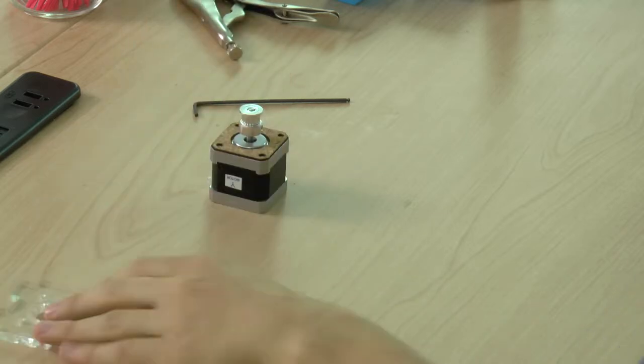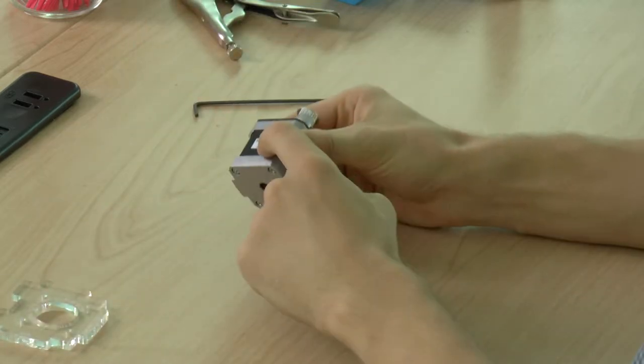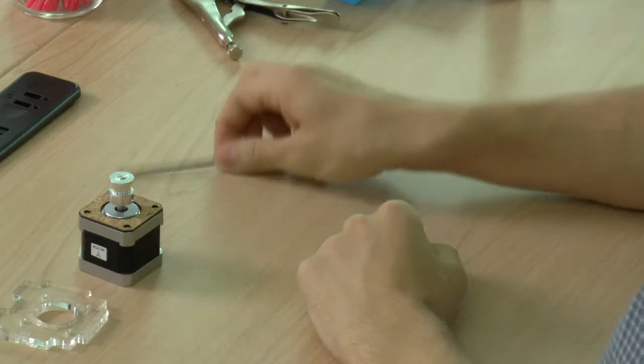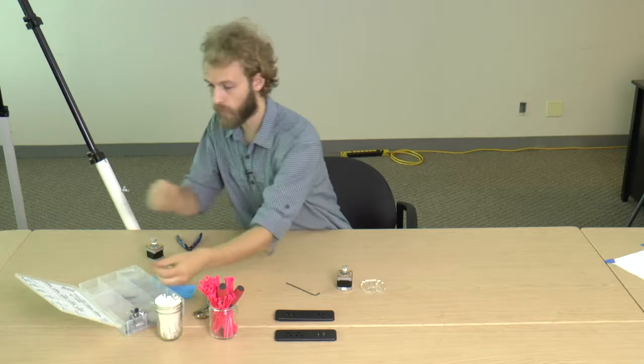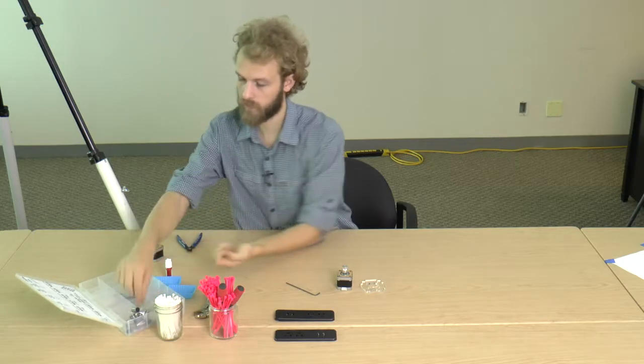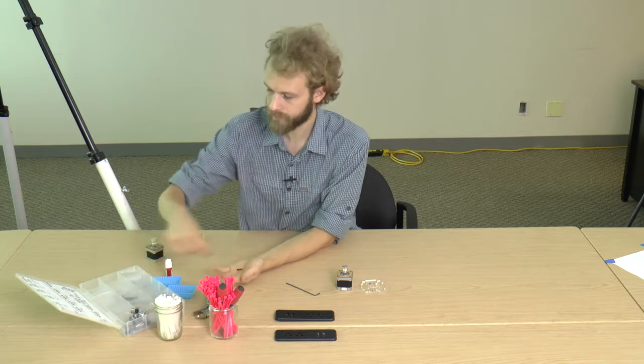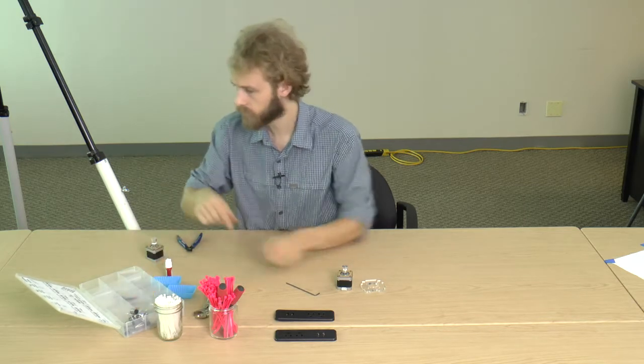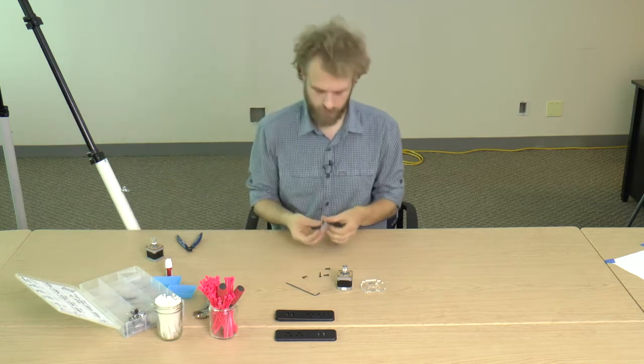Let's put it together. For this step you'll need a Y bracket, looks like this, the Y motor with the Y label on it, M3 hex key. You'll need four M3 by 12 bolts and four serrated washers.